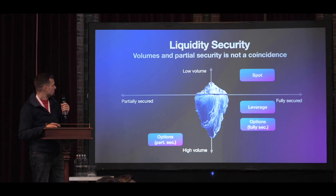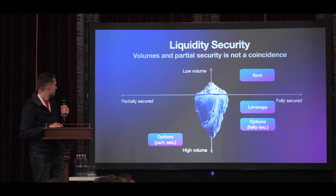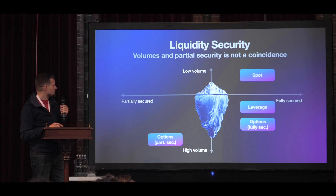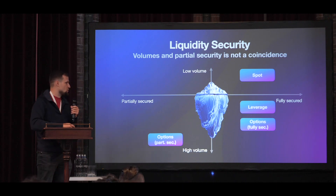If we compare how this liquidity is backed by value — the security of this liquidity — we can compare it by trading volumes and how much it's secured, whether fully or partially. Spot liquidity is fully secured, but it usually has lower volumes than other liquidity types. For example, leverage liquidity is when traders take long or short positions.